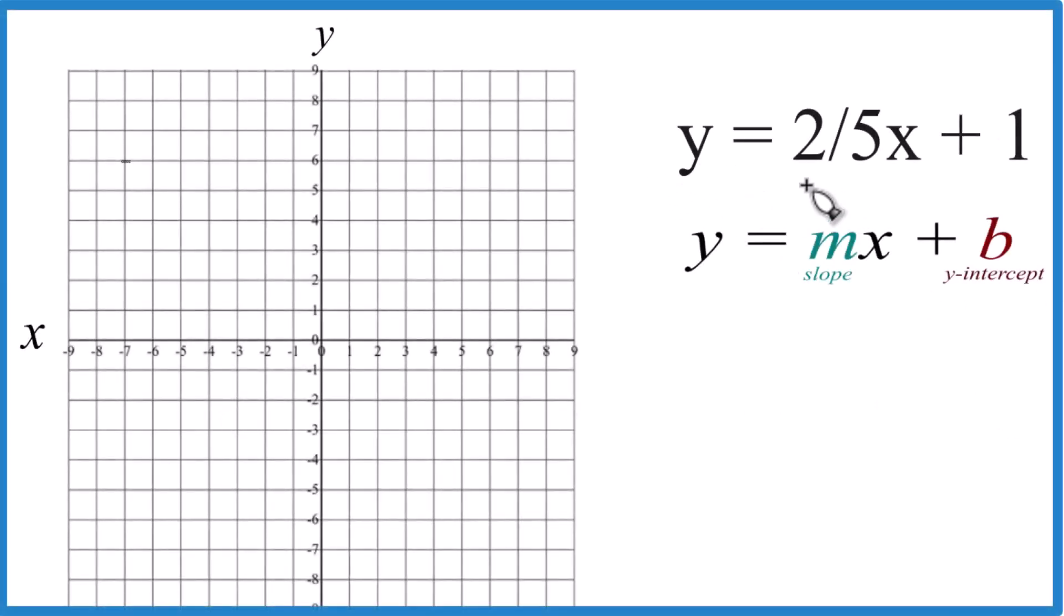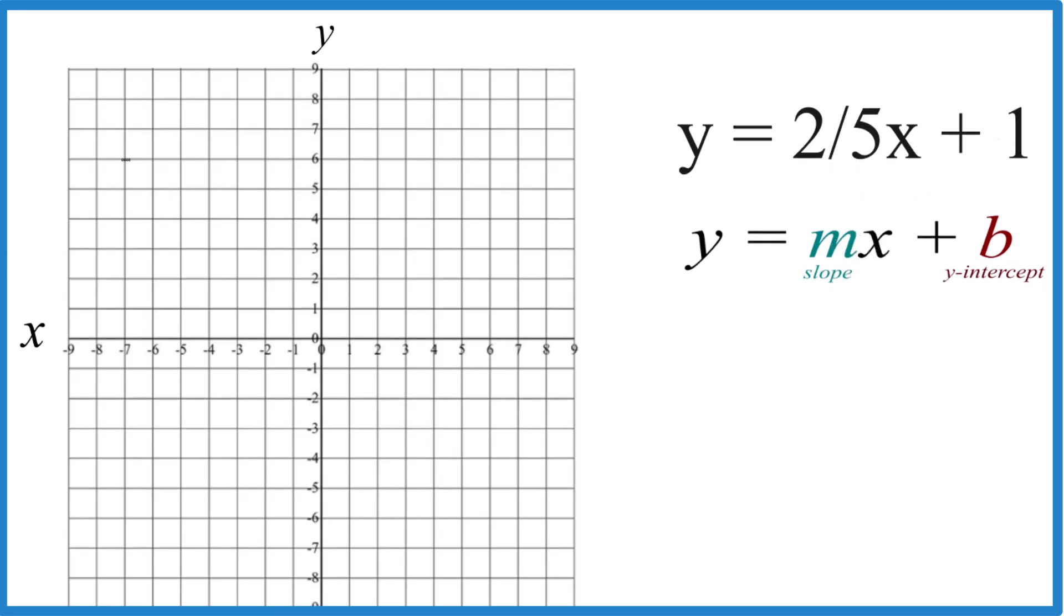In this video, we're going to graph the linear equation y equals two-fifths x plus one, and we're going to use slope-intercept form to do it. It's a lot easier when you have a fraction like this as your slope to use slope-intercept form, but you could use a table of values. You get the same answer either way.